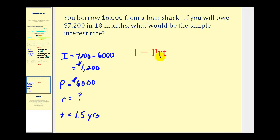So let's go ahead and set this up and see if we can solve for R. I, which is 1,200, must equal P, which is 6,000, times R, which we're solving for, times T, which is equal to 1.5 years. Let's go ahead and simplify the right side. 6,000 times 1.5 would be 9,000. So we'll have 1,200 is equal to 9,000 R. Now we'll divide both sides by 9,000 to determine our interest rate.